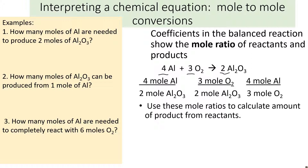We can also make something called a mole ratio. A mole ratio is just the ratio of any two quantities. For example, four moles of aluminum to two moles of aluminum oxide — that's one possible mole ratio. Or three moles of oxygen to two moles of aluminum oxide. Or four moles of aluminum to three moles of oxygen. We can use mole ratios to calculate how much we might need of different reactants or how much product we can get.